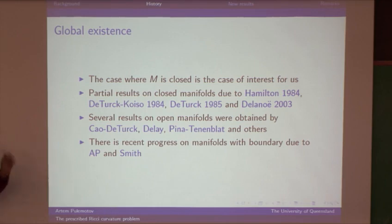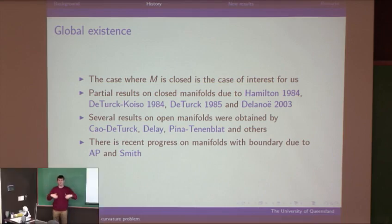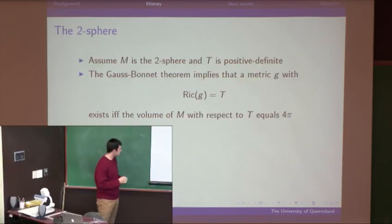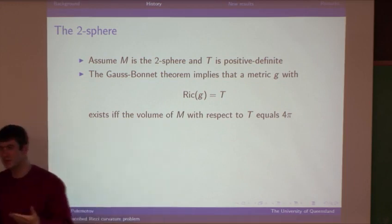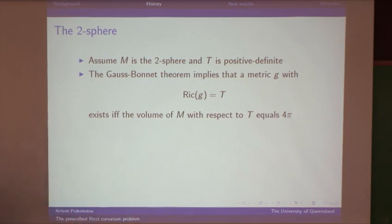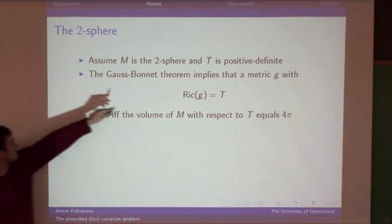Now let's get to our case of interest. We have a closed manifold, we have a tensor T, and we want to find a Riemannian metric on the entire manifold with that Ricci curvature. In order to understand what sort of results we might expect, let's first consider a special case: the manifold M is a 2-sphere, and we assume the tensor T is positive definite.